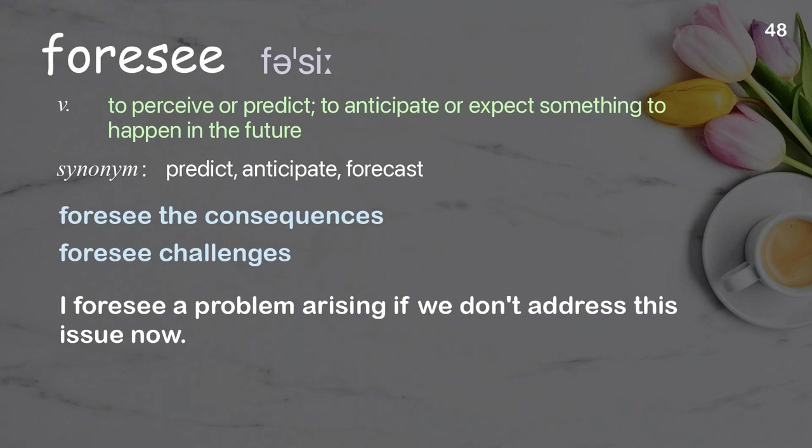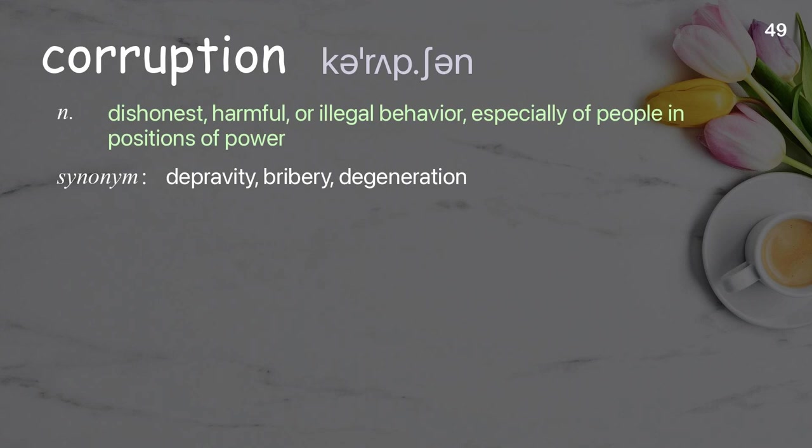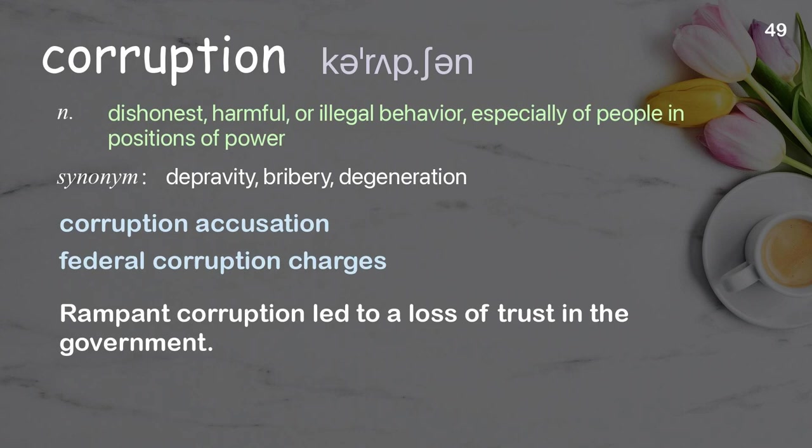Corruption: dishonest, harmful, or illegal behavior, especially of people in positions of power. Examples: corruption accusation, federal corruption charges. Rampant corruption led to a loss of trust in the government.